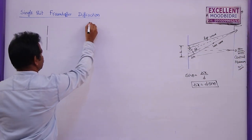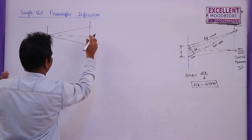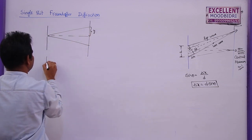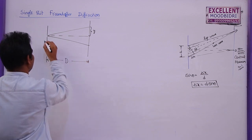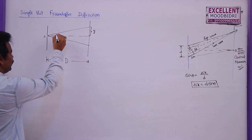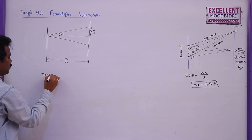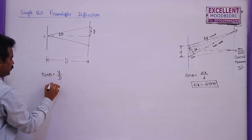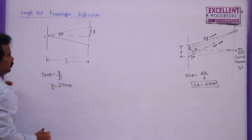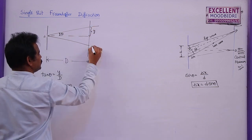For a small slit: this is the screen and this is the central bright fringe. Let this distance from center to first minimum be y, the distance between the slit and screen be capital D, and small d be the width of the slit. Taking this angle as theta, we can write tan θ = y / D, so y = D tan θ.